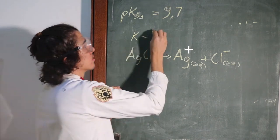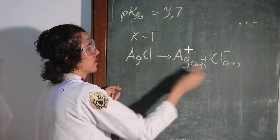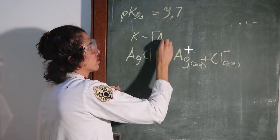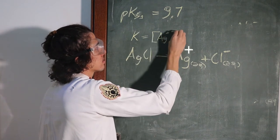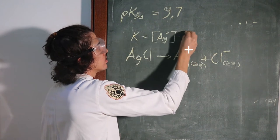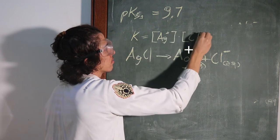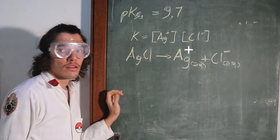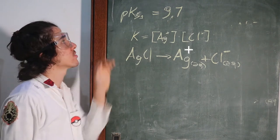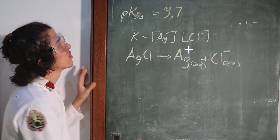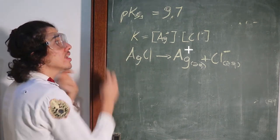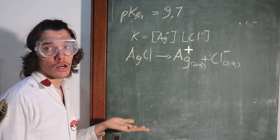So Ag+ times Cl-. Okay, nothing really far away from our standard chemistry knowledge. So this p means minus log.